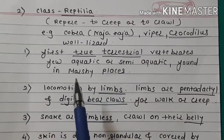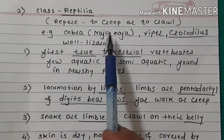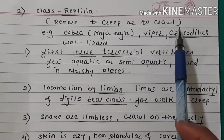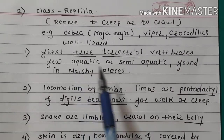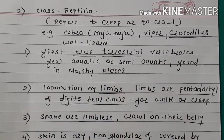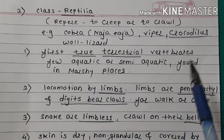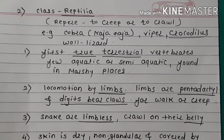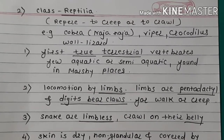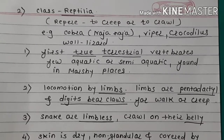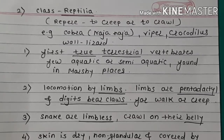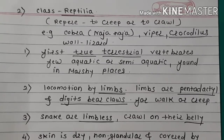Class Reptilia — the word means to creep or to crawl. Examples: cobra, viper, wall lizard, crocodile, etc. These are true terrestrial vertebrates. Few are aquatic, semi-aquatic, or found in marshy places.